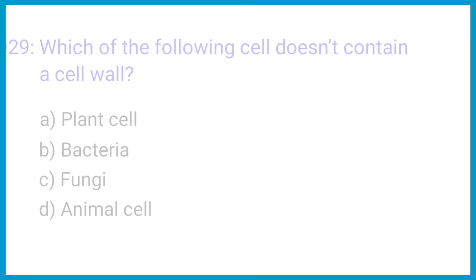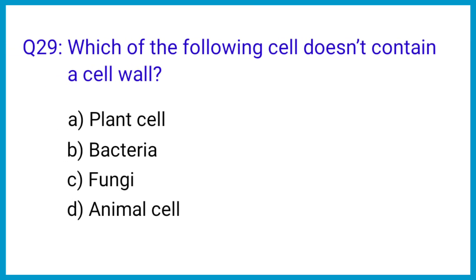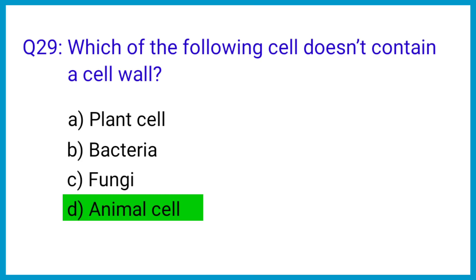Question number 29. Which of the following cells does not contain a cell wall? The correct answer is option D: Animal cell.